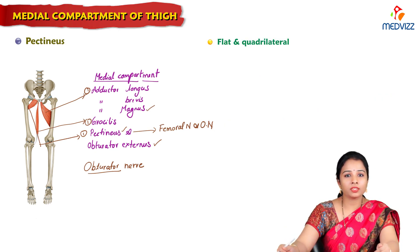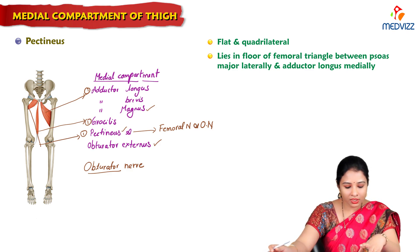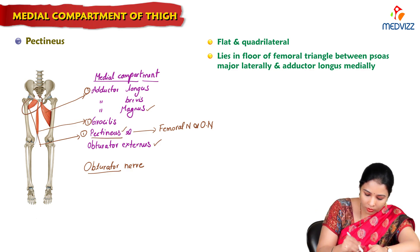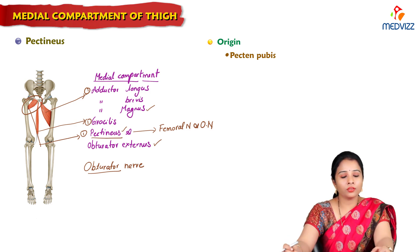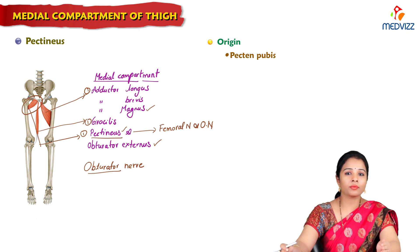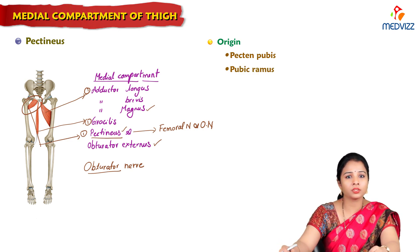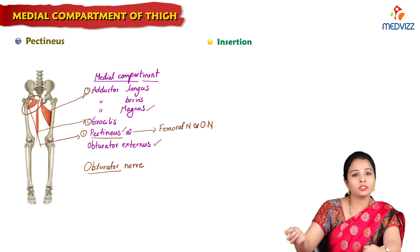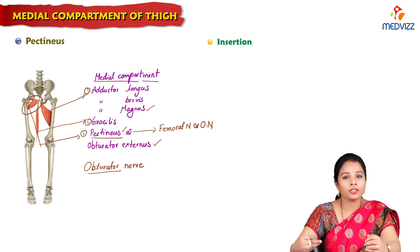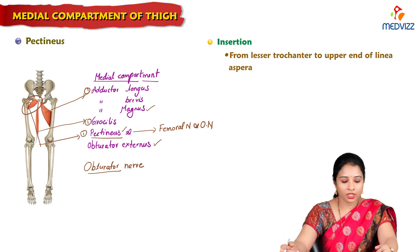Pectineus is a flat quadrilateral muscle which lies in the floor of the femoral triangle, between psoas major laterally and adductor longus medially. It gets its origin from the pectenial line of the pubis, the ramus of the pubis, and the pectenial fascia. It gets inserted just below the lesser trochanter, sloping downwards and laterally, inserting from the lesser trochanter to the upper border of the linea aspera.